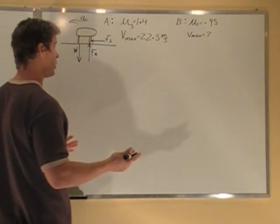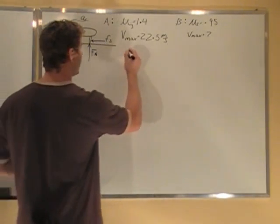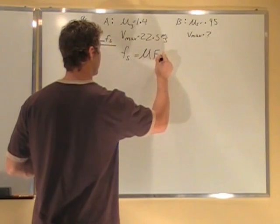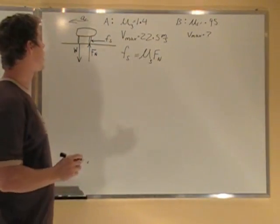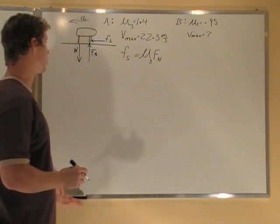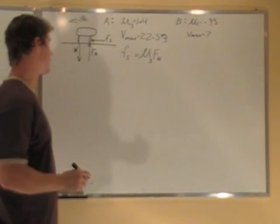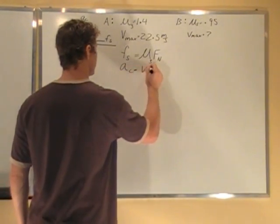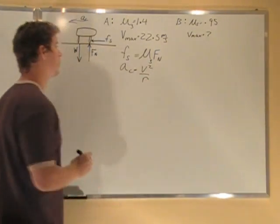Just some formulas we know. We have Fs is equal to mu Fn. The other formula we'll need is the centripetal acceleration. We know centripetal acceleration is V squared over R.